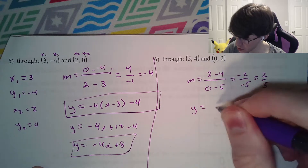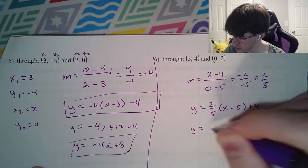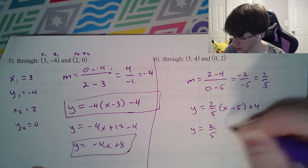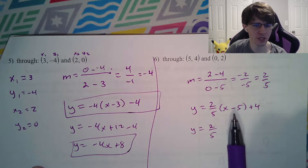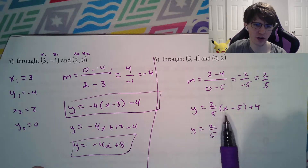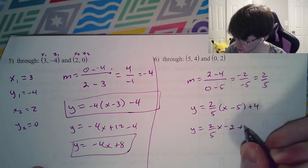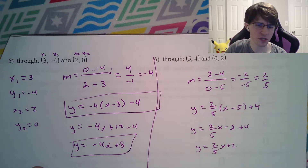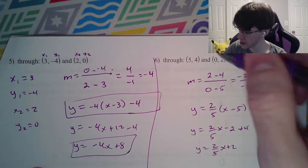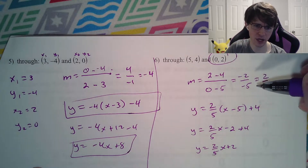Our equation: y equals 2 fifths times x minus 5 plus 4. We do need to be a little careful with the distributive property. When we do 2 fifths times negative 5, the 5s cancel completely, and we end up with x minus 2 plus 4, or y equals 2 fifths x plus 2. You could have also gotten this as a freebie by noticing the x is 0, therefore y gives you 2 — the y-intercept right away.